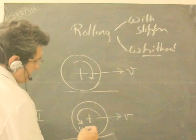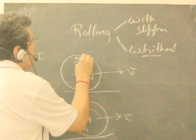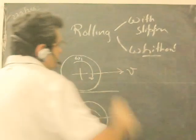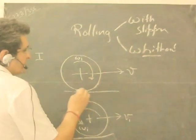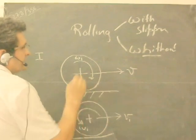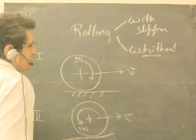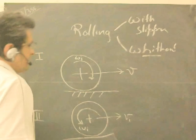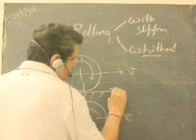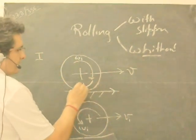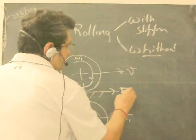Omega initial is in this direction. In this case, omega initial and velocity are also in this direction. Let us take this case: a sphere is given certain rotational angular velocity and it is placed on a rough surface. As soon as it is placed on the rough surface, there is a friction force which will oppose the rotational motion and it will be in this direction, because the frictional force will be in this direction.